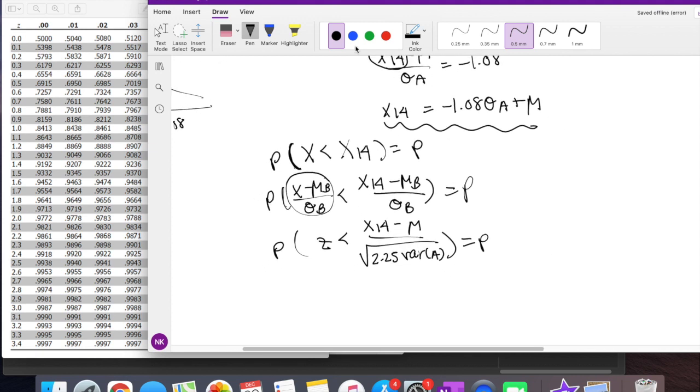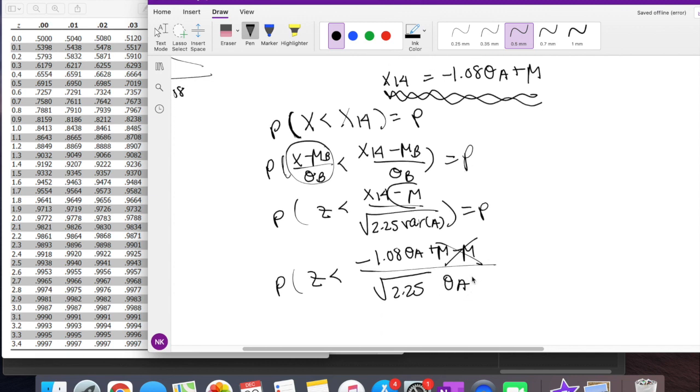We know X of 14 is given here, our squiggly line, so I'm going to plug that in. Z is less than negative 1.08 standard deviation of A, plus M. And then I have this part, minus M, divided by the square root of 2.25. The square root of variance we know is just given to be standard deviation of A. The means just cancel out. And then the standard deviation also cancels out in the top and the bottom.